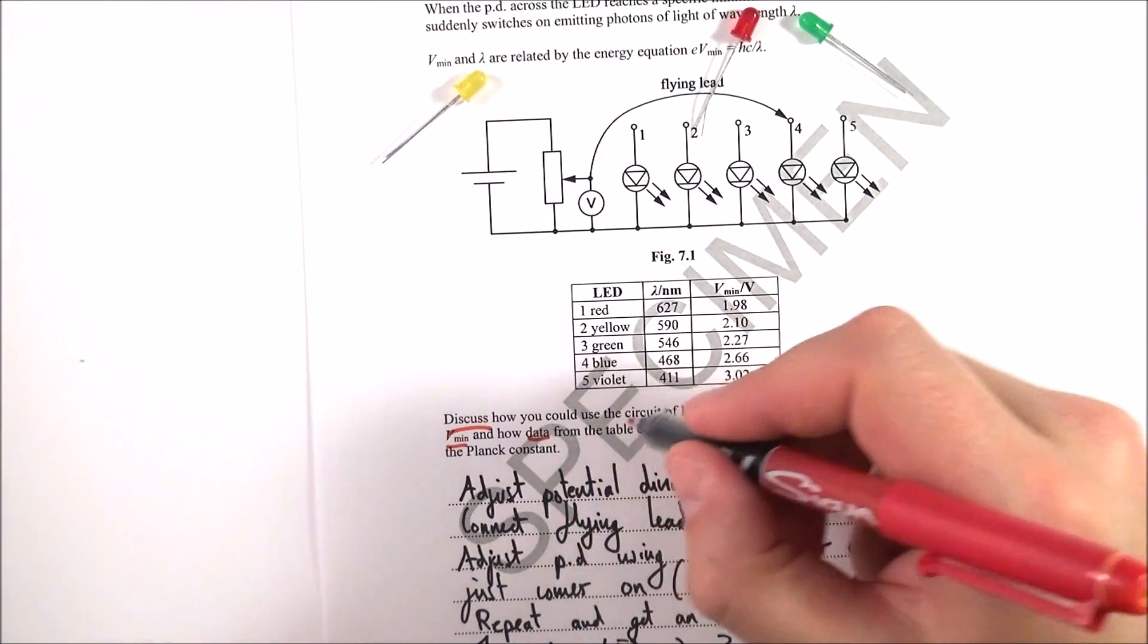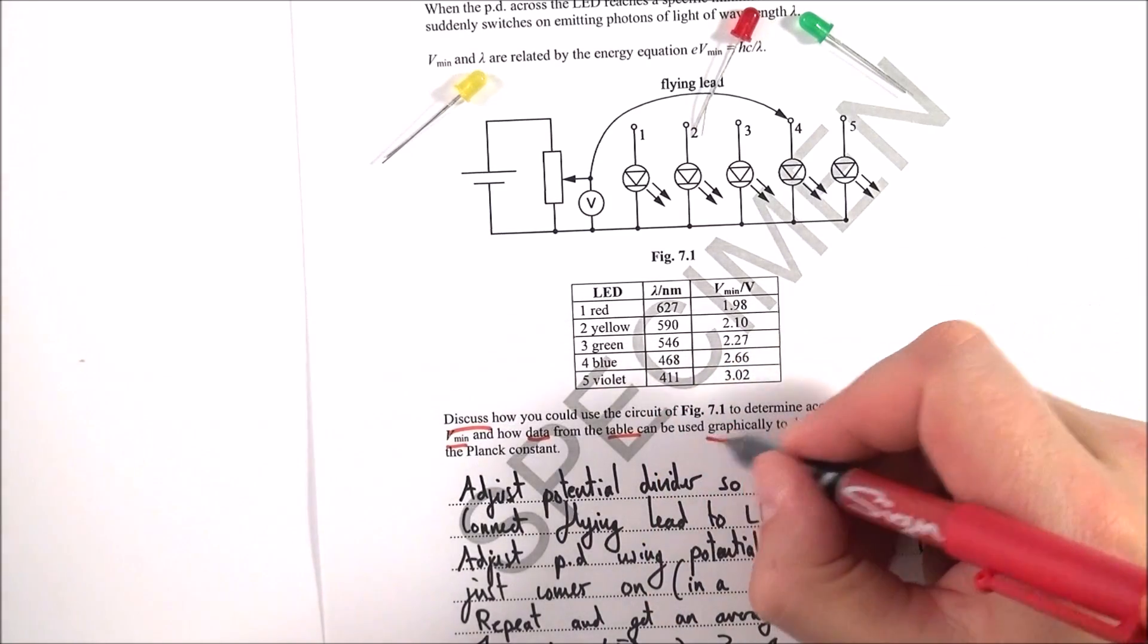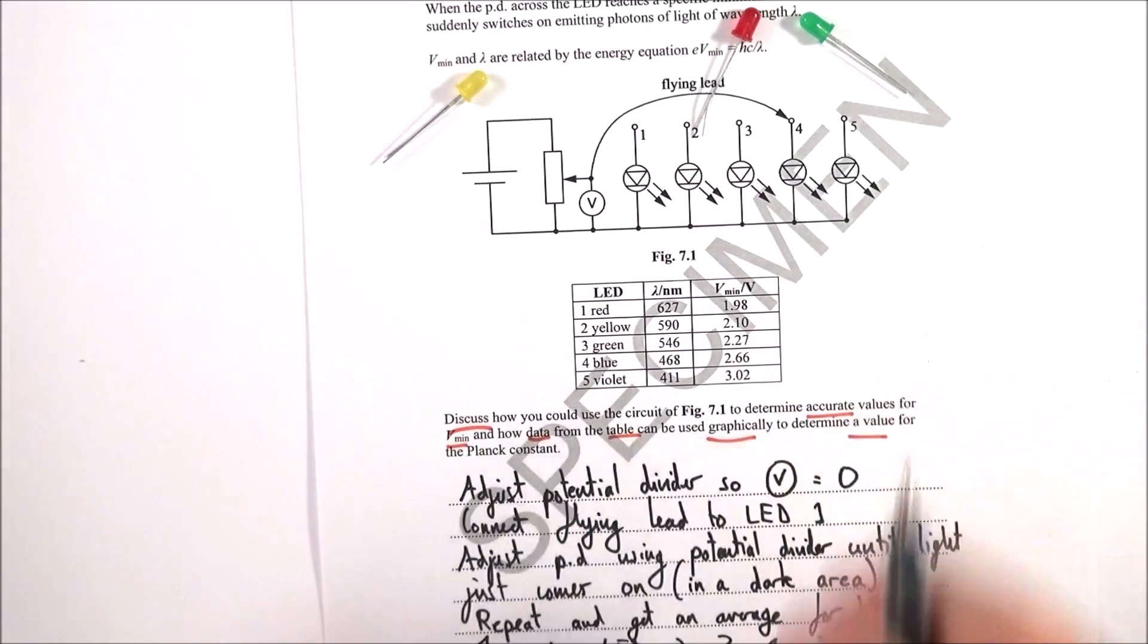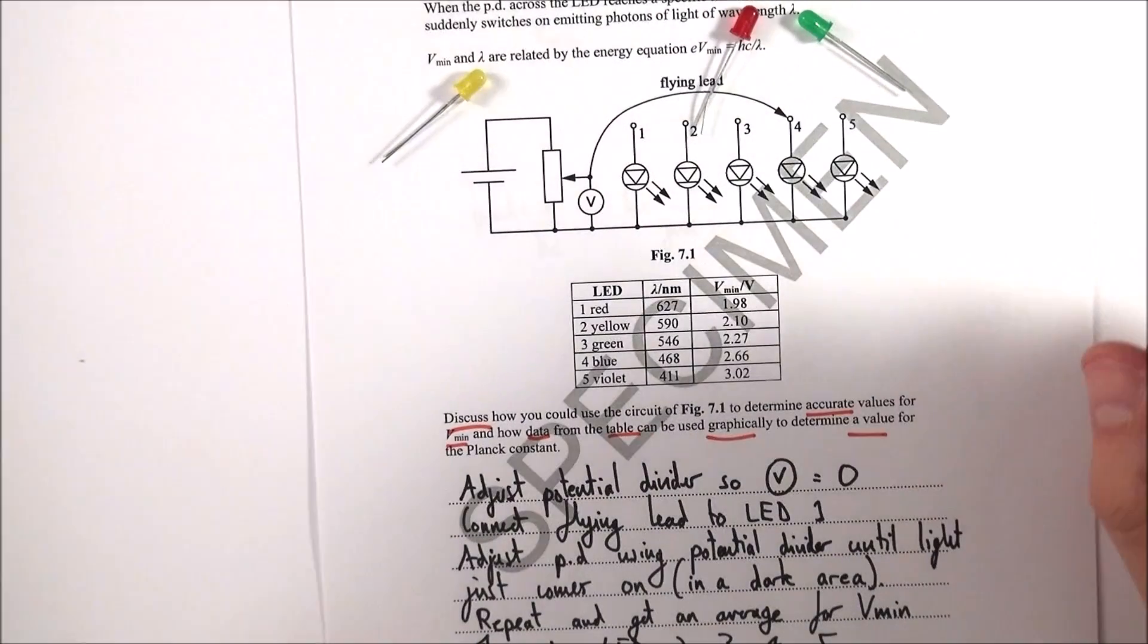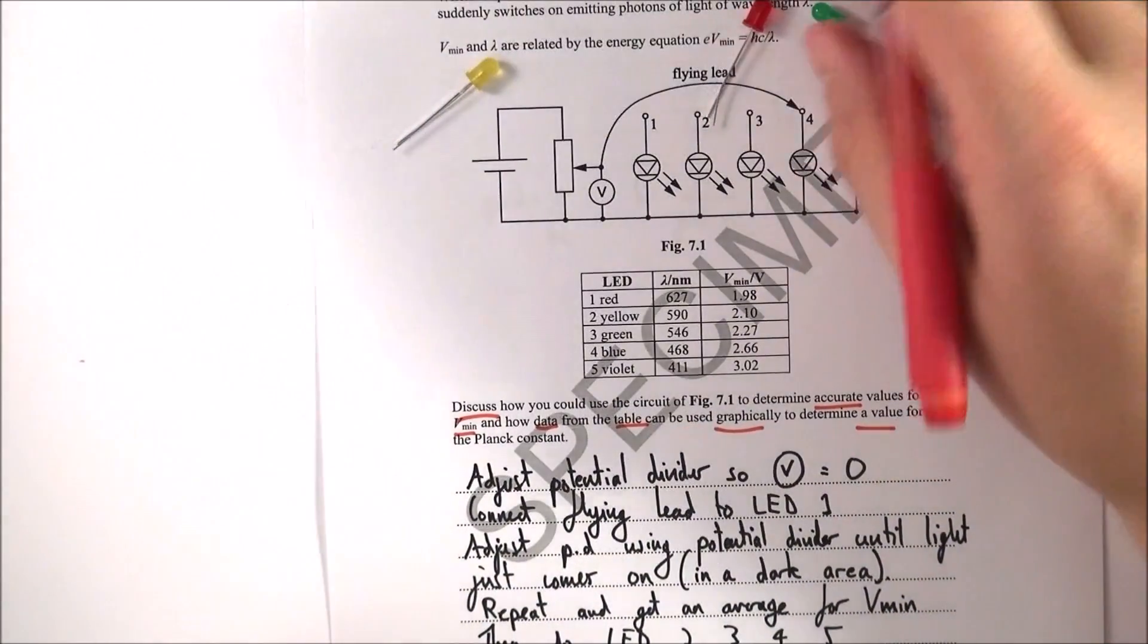Then how data from the table can be used to graphically determine a value for the Planck constant. There's lots of stuff there, but hopefully you should be aware of this.